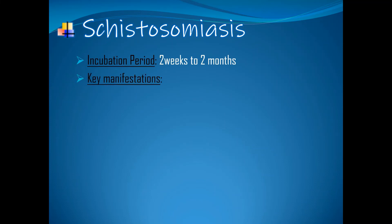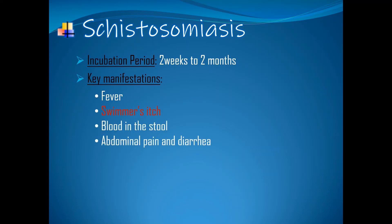Key manifestations: fever, swimmer's itch — a parasitic rash present 24 hours after penetration in the skin — blood in the stool, abdominal pain and diarrhea. Liver enlargement is common in advanced cases and is associated with accumulation of fluid in the peritoneal cavity. There may also be spleen enlargement.